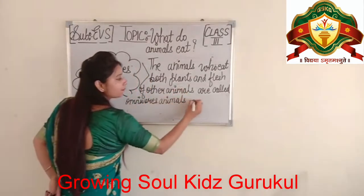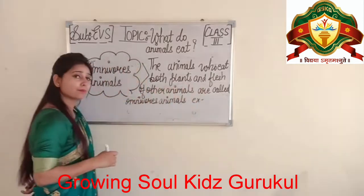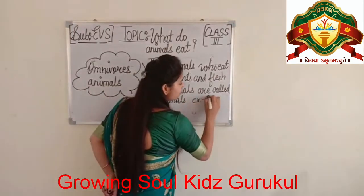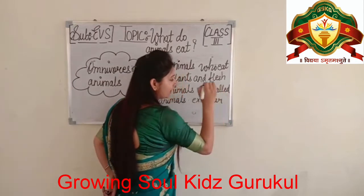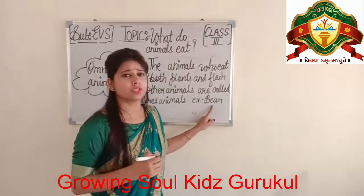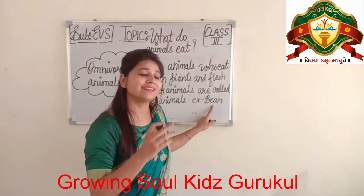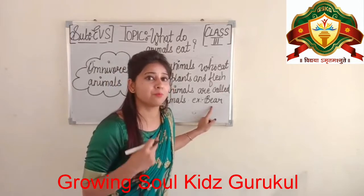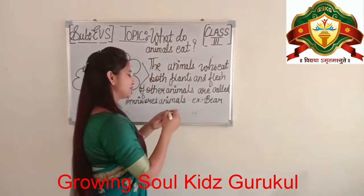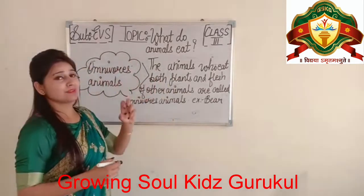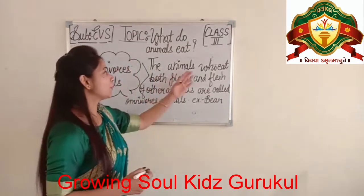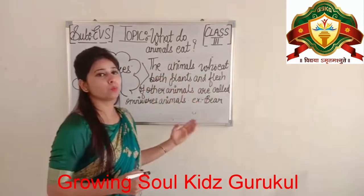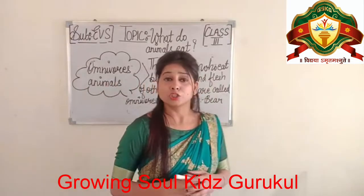An example of omnivore animals is bear — pronounced 'bear', not 'bear'. So animals who eat both plants and flesh of other animals are called omnivore animals.